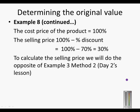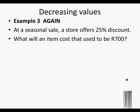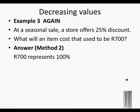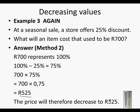To calculate the original price, we do the opposite of Example 3, Method 2 of Day 2's lesson. In that example, a store offered a 25% discount on an item that used to be 700 rand. The 700 rand is 100%, and subtracting the discount means we only pay 75% of the original. So 700 times 0.75 equals 525 rand — the price decreases to 525 rand.